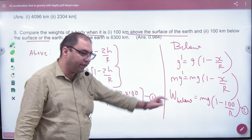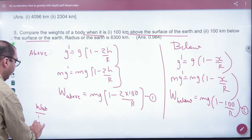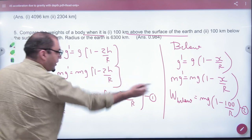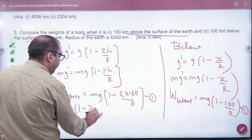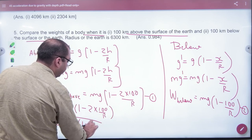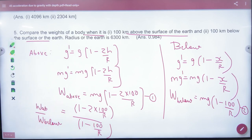Divide them. Weight above divided by weight below equals, mg cancels, (1 - 200/R) divided by (1 - 100/R). You can solve it with the value of R and get the ratio.